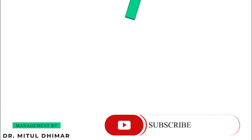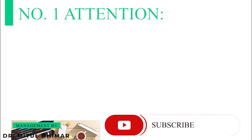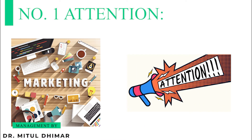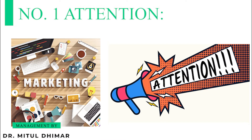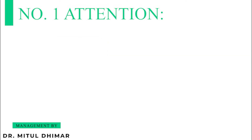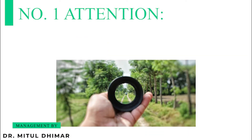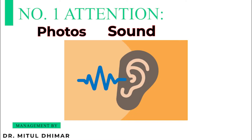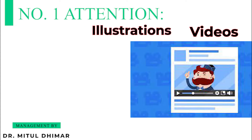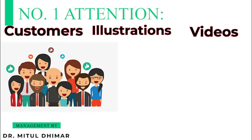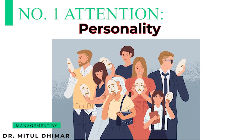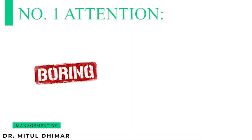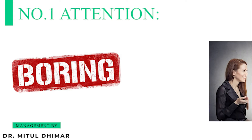Number 1: Attention. The first step in marketing or advertising is to consider how to attract the attention of consumers — they will try to let you know about their products. Some of the elements used to grab people's attention are photos, sound, words, videos, illustrations, customers, personality, etc. The main objective of attention is to avoid boring messages and prevent them from being ignored.